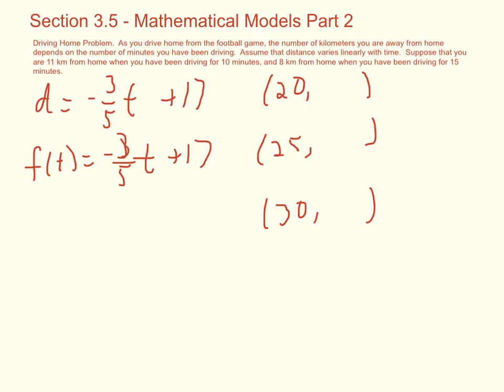Okay, so at 20 minutes when time is 20, so that's negative 60 divided by 5, so that's negative 12 plus 17, looks like distance is 5 kilometers. At 25, that's negative 15, so it looks like 2. And then at 30, what do we get here? Negative 1, right? 30 divided by 5 is 6 times negative 3 is negative 18 plus 17, negative 1. And we'll see, does that actually make sense?